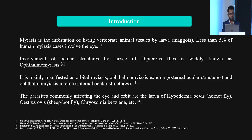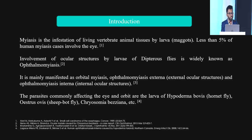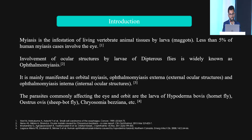Myiasis is the infestation of living vertebrate animal tissues by larvae. Less than 5% of human myiasis cases involve the eye. Involvement of the ocular structures by the larva of dipterous flies is known as ophthalmomyiasis. It can be of three types: orbital myiasis, ophthalmomyiasis externa, and ophthalmomyiasis interna.